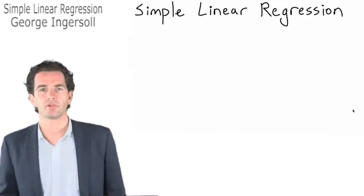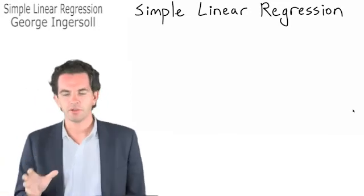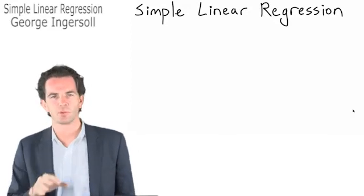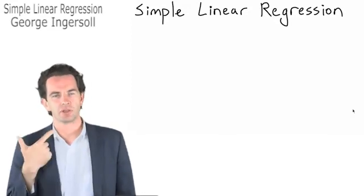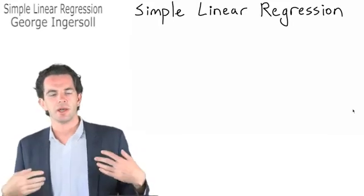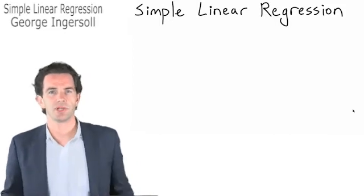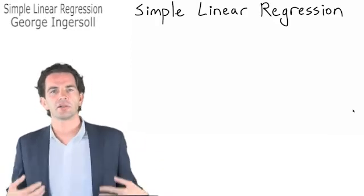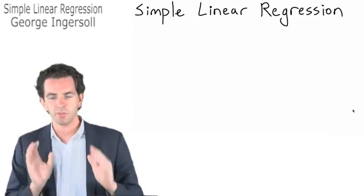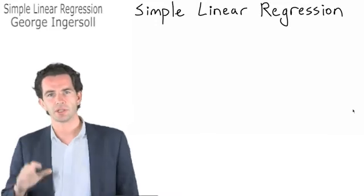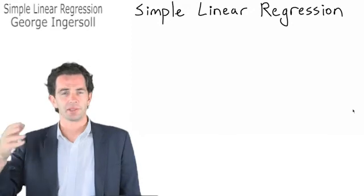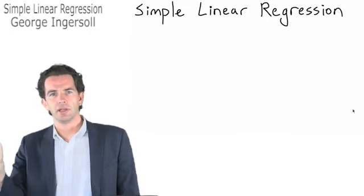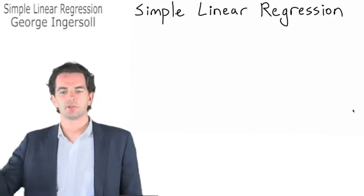In this video, we're going to start with simple linear regression. Simple linear regression allows us to predict a linear relationship between two variables. We call it simple because we're dealing with two variables. There could also be multiple regression, which we'll get to in subsequent videos — that involves multiple variables and their relationship to a single variable. We categorize this as linear regression because we're assuming a linear relationship between the two variables. When one variable goes up by a certain amount, the other is going to go up or down by a predictable linear amount.